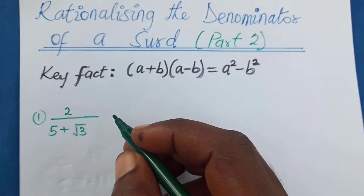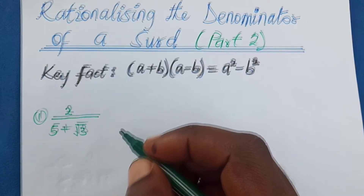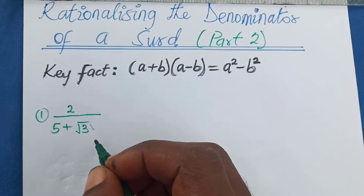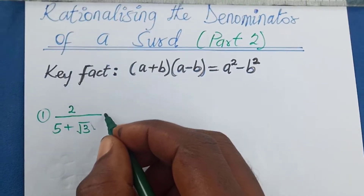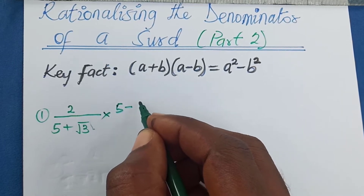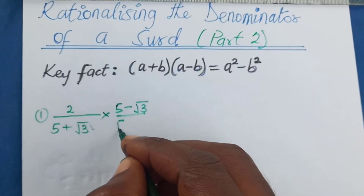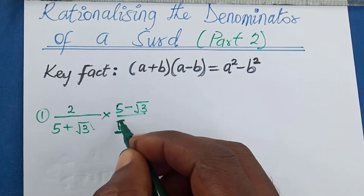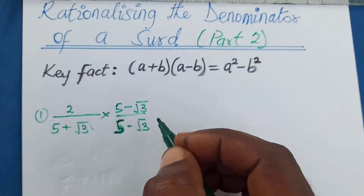If you have a number like this and you want to rationalize it, the only thing you have to do is multiply both the numerator and the denominator by the conjugate of the denominator. So we have this times (5 minus 2√3) over 5 — this is (5)(5) minus (√3).